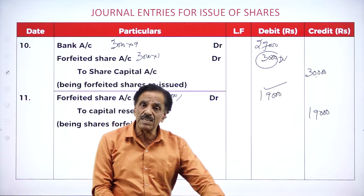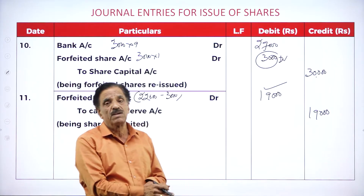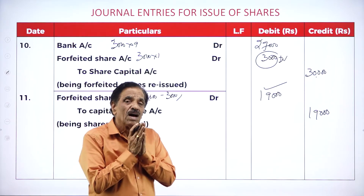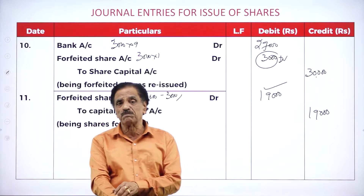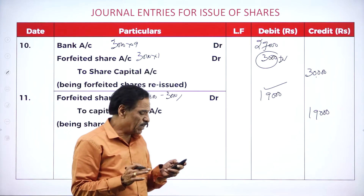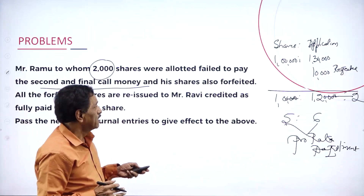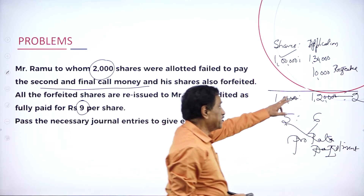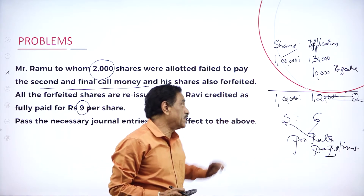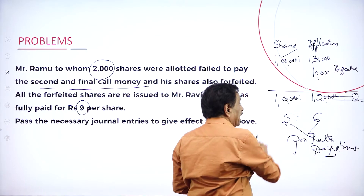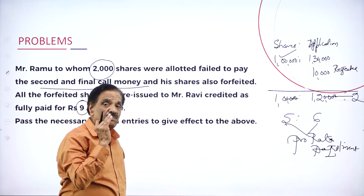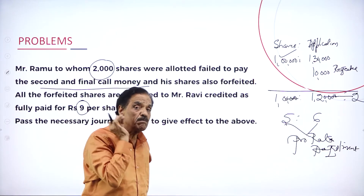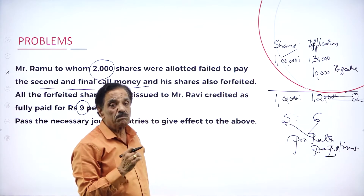Let me summarize once again. 1,30,000 applications received, 1,00,000 shares required. 10,000 rejected, 1,20,000 accepted for 1 lakh shares — pro-rata ratio 5 is to 6. For every 5 shares, we require 6 applications: 12 applications give 10 shares, minimum 5 shares require 6 applications. This is called pro-rata adjustment. We will now go through the entries.